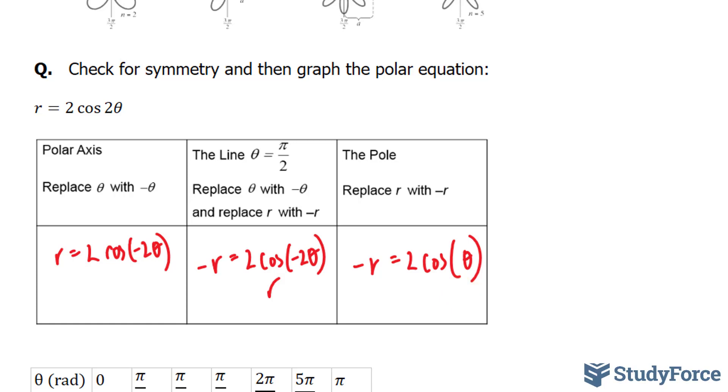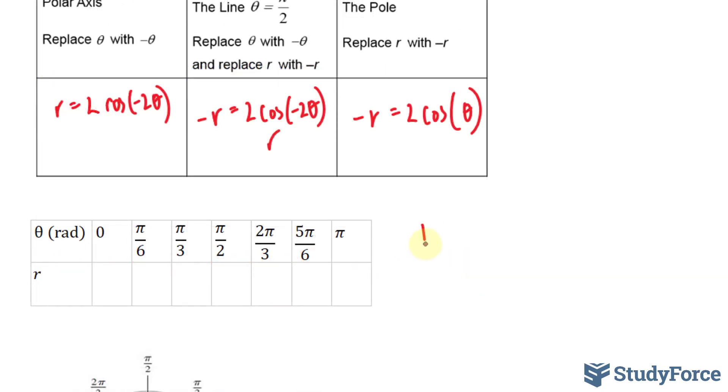Now that we've performed these tests, we can go on and fill in this table. Remember, the equation was r equals 2 cosine 2 theta.